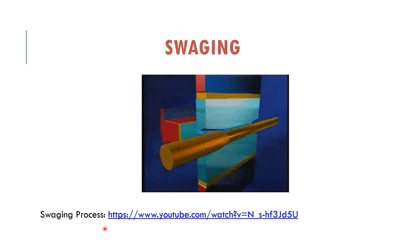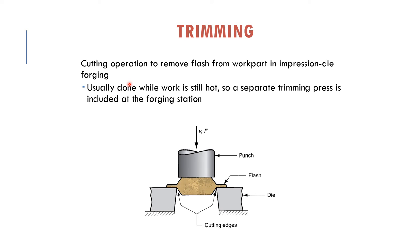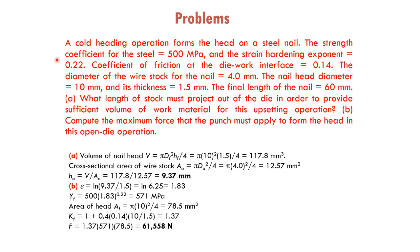The trimming process is a cutting operation to remove the flash from the work part in impression die forging. The part is placed on cutting edges, punched so the part drops down through the die, and the flash remains behind on the die. After removing the flash, you have the final product.